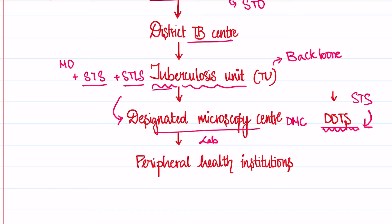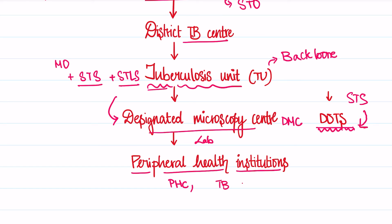Under this, we have the peripheral health institutions — the PHCs, the chest clinics, and the dispensaries. This is where all or most of the TB cases get picked up. Patients who are symptomatic — such as with fever or cough, or presenting with TB symptoms — are referred to the nearest clinic for investigations and diagnosis.